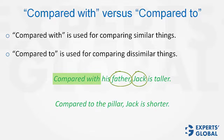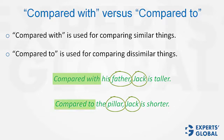One more example. COMPARED TO the pillar, Jack is shorter. A human being is compared with a pillar. I have deliberately taken a very simple example to convey the concept. COMPARED WITH would not be correct in the second example, because a human is being compared with a pillar. COMPARED TO would be the correct usage here.